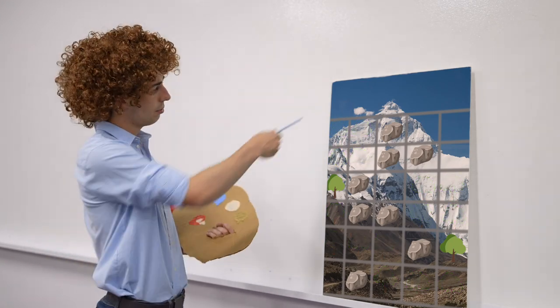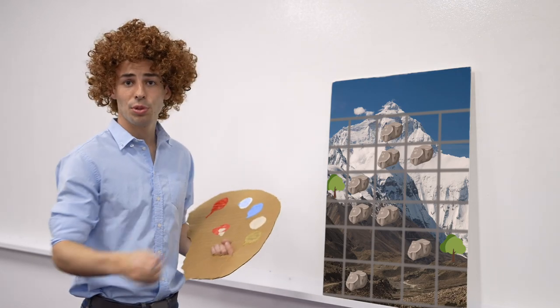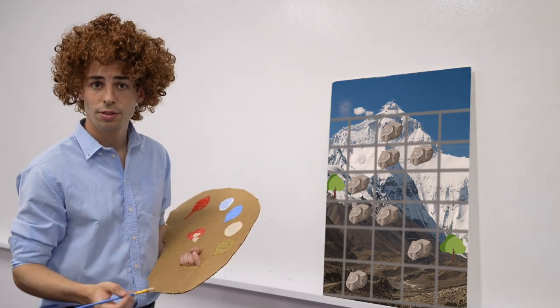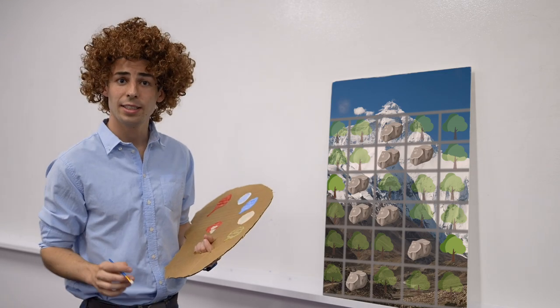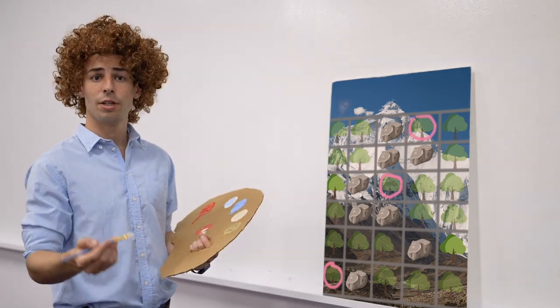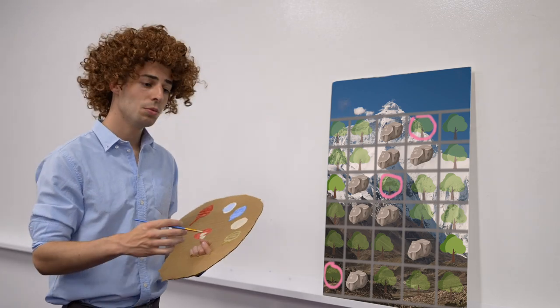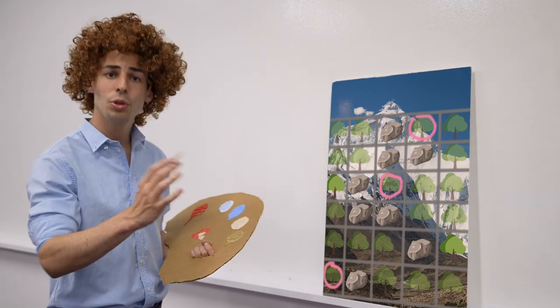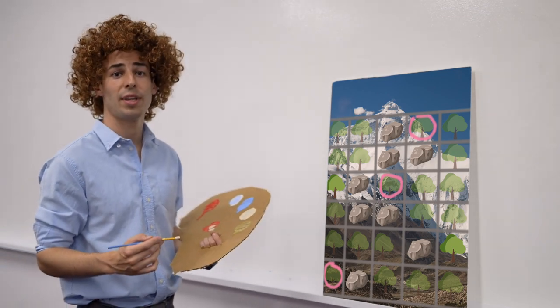For starters, let's look at an example where instead of trying to paint more trees, we start out with all the trees we might need. If we ever have a tree where we can't give it enough friends, well we'll not get rid of it, but we'll move it to a different painting. How about that?